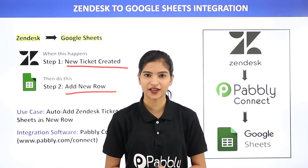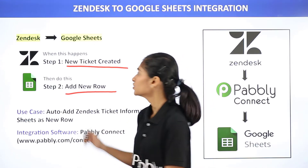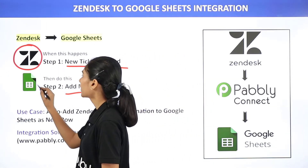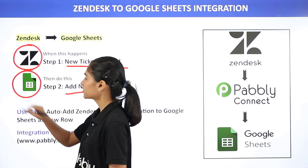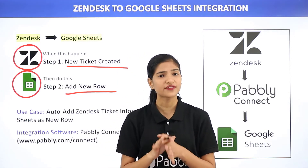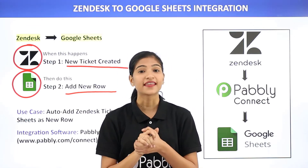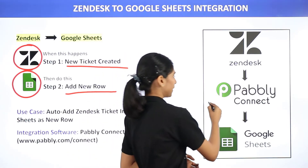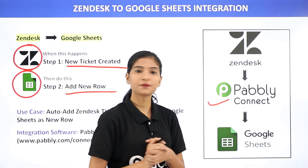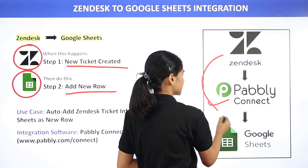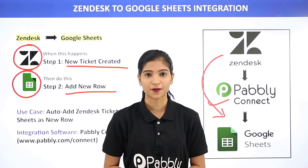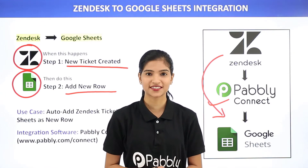First, let us know what these two software applications are all about. Zendesk is a customer service and support ticketing software, whereas Google Sheets is an online spreadsheet program. The issue here is that Zendesk and Google Sheets don't have any integration between them, and that is why we are going to use Pavli Connect. Pavli Connect is an integration software which will help you to transfer data from Zendesk to Google Sheets. The best part is you don't require any knowledge of coding.